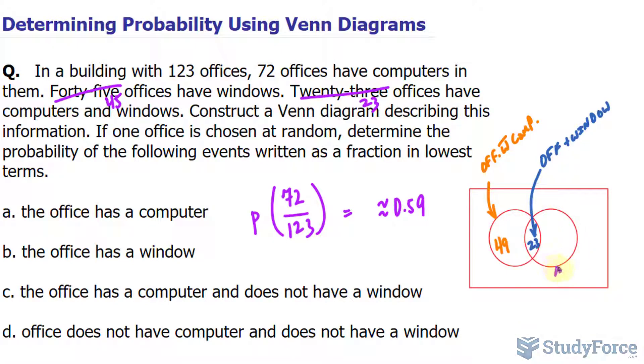This circle will represent offices that only have windows. We are told that there are 23 that have them both. And over here, 45 offices have windows. So we'll subtract 45 and 23 together. That gives us 22.